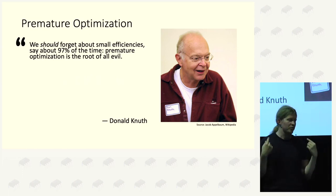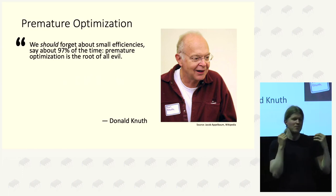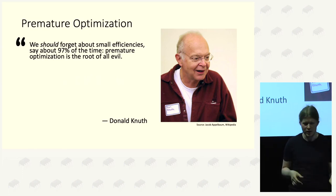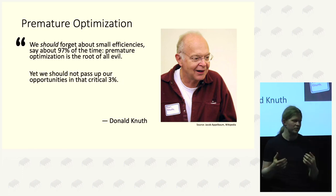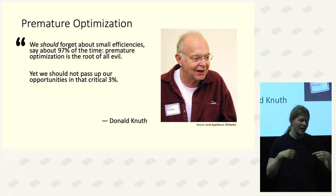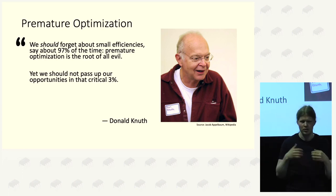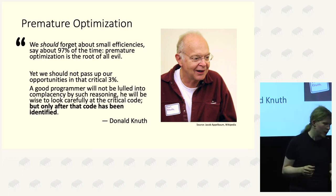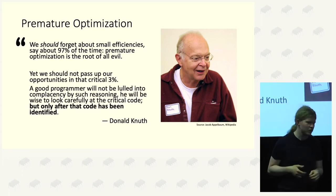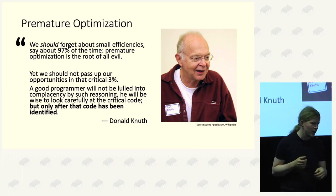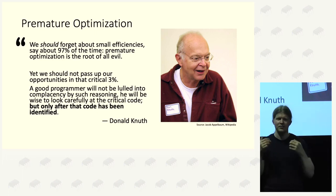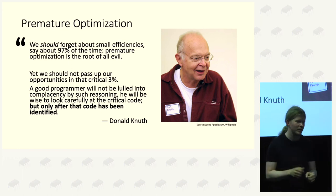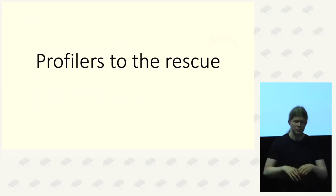Because I missed the full quote from Donald Knuth. He wrote: 'We should forget about the small efficiencies in about 97% of the time. Premature optimization is the root of all evil.' And he further told us: 'Yet we should not pass up our opportunities in the 3%. A good programmer will not be lulled into complacency by such reasoning. He will be wise to look carefully at the critical code, but only after that code has been identified.' So how do we do this? Profilers to the rescue.